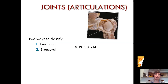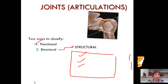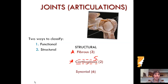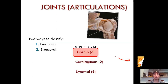Now the structural classification is a lot more complicated, with additional vocabulary. There are three types of what are called fibrous joints. There are two types of joints classified as cartilaginous — five syllables. And then there are six joints classified as synovial — four syllables. Let's go in order. We'll start with fibrous, finish them off, move on to cartilaginous, finish them off, and then finish up with synovial.